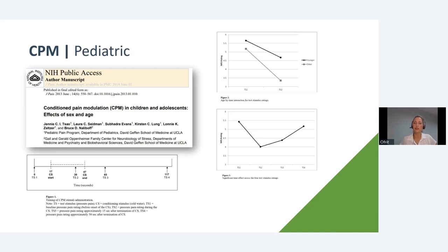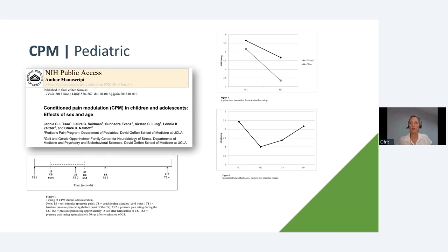Another pediatric study examined 133 healthy children aged 8 to 17 years by Tsao at UCLA. In general, these children did have a CPM effect. Most interestingly, younger children (aged 8–11) had a less effective CPM compared to the older children. This suggests we may develop our CPM ability throughout childhood — an interesting finding.